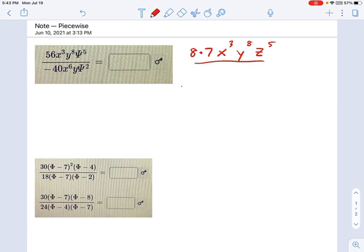And we're dividing it by negative 40, which is negative 8 times 5, x to the 6th, y, and we're going to say z squared.